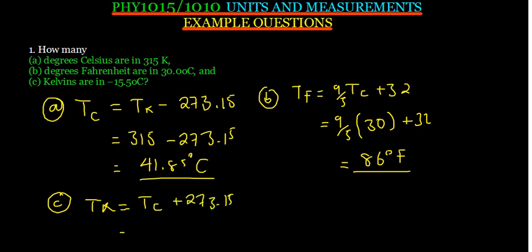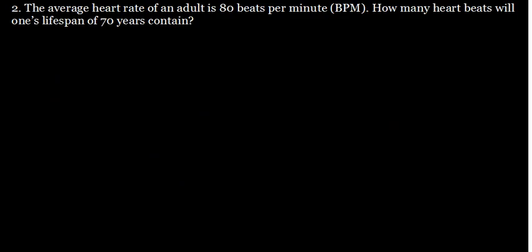So this is going to give us the temperature in degrees Celsius, that is negative 15.5, plus 273.15, which gives us 257.65 Kelvin. That is how we work out this one.